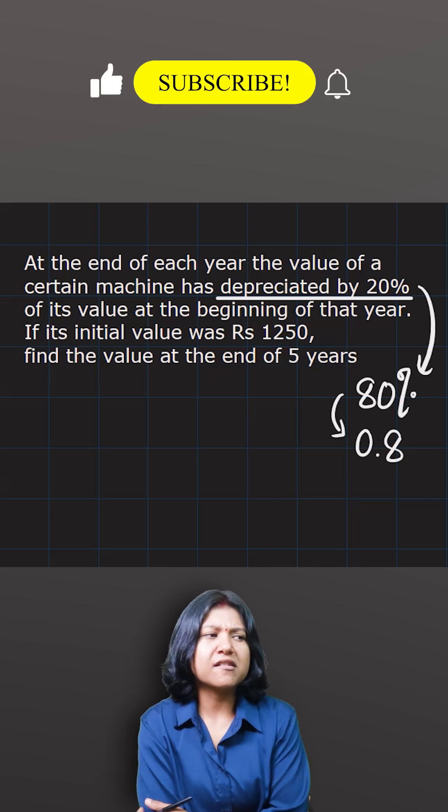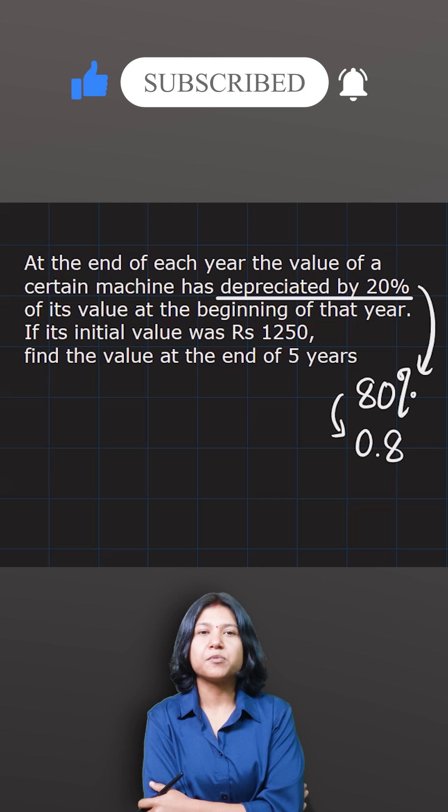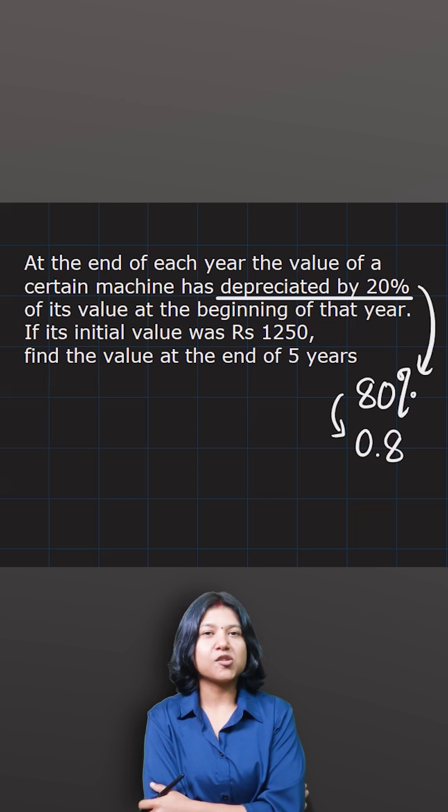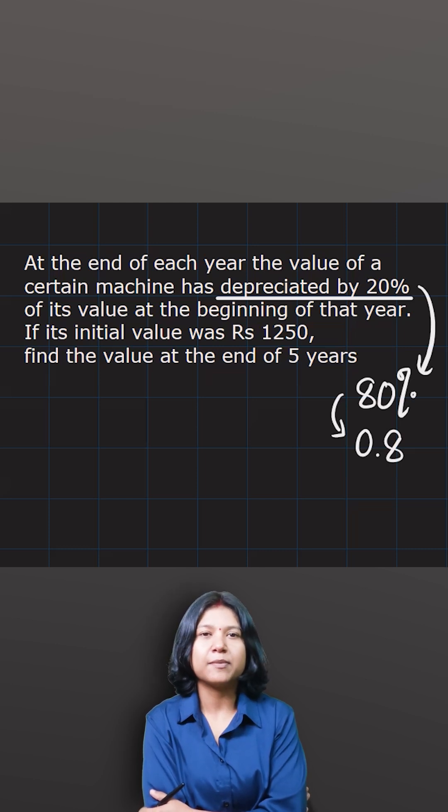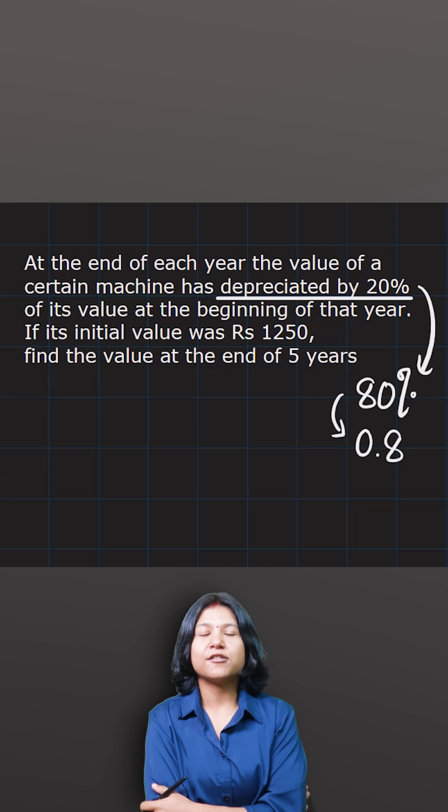To find out that, because it's been clearly told to you that it's going to get depreciated by 80%, which means you have a multiplier here, the fixed multiplier. So when you have a fixed multiplier, then the kind of sequence formed is always geometric.